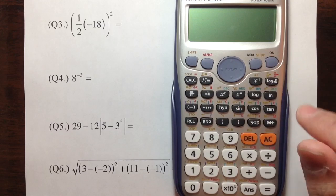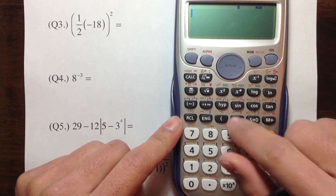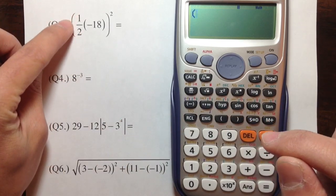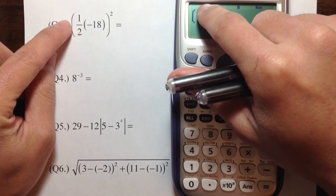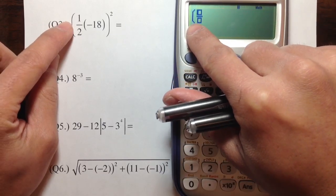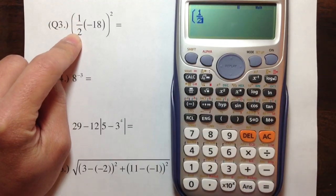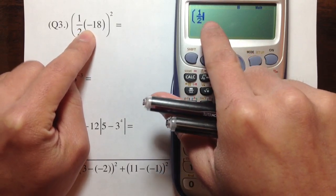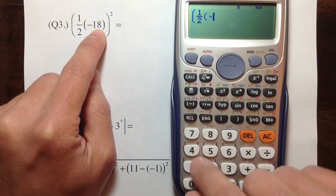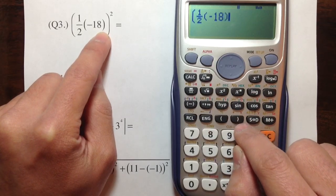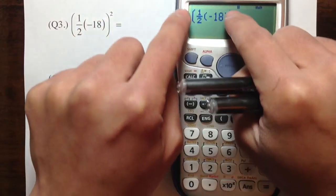Number 3. I am going to have a big parentheses first — but on the calculator we only have one size of parentheses, so just use this. I need to have one half, so press the fraction key. Notice that this calculator automatically adjusts the size of the parentheses for you. I need to have a 1 on the top, then go down to the denominator and enter 2. Press to the right, and then I need a parentheses — negative 18. Another parentheses, negative 18. One closed parentheses for the big parentheses for the entire expression.